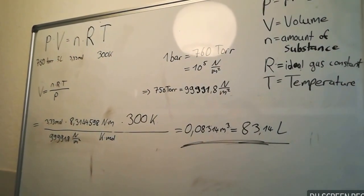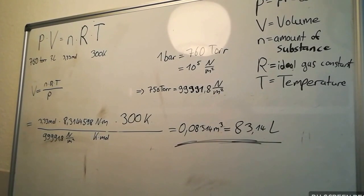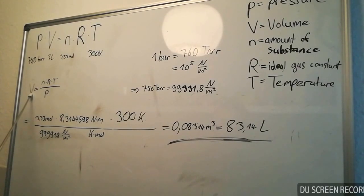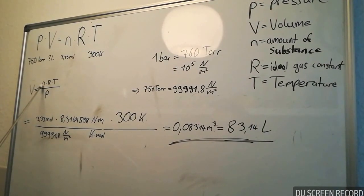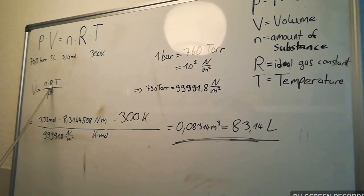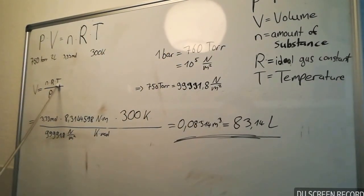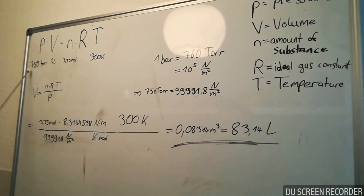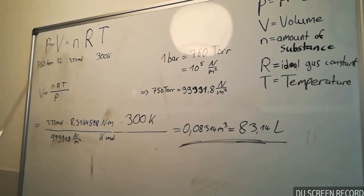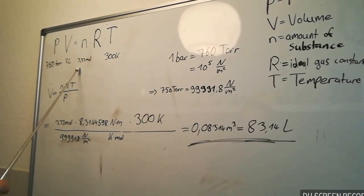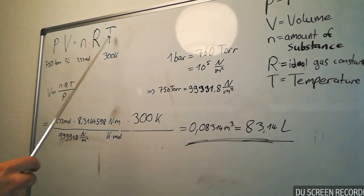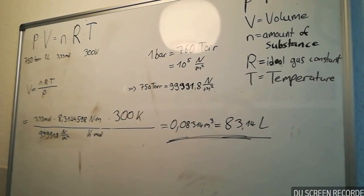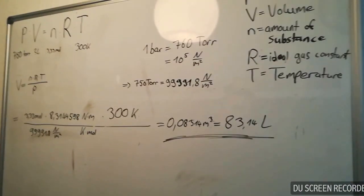For our third calculation, we want to find out the volume. We transform the formula: volume is equal to the amount of substance multiplied with the ideal gas constant multiplied with the temperature divided by the pressure. Our pressure is 750 Torr, our amount of substance is 3.33 mol, and the temperature is 300 kelvin. So, first we transform the units into the correct dimensions.